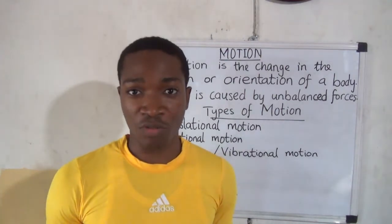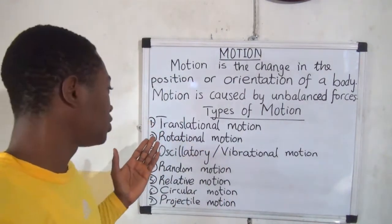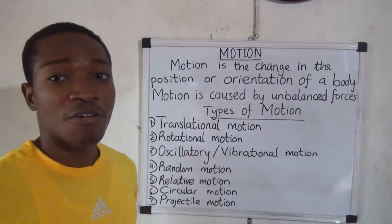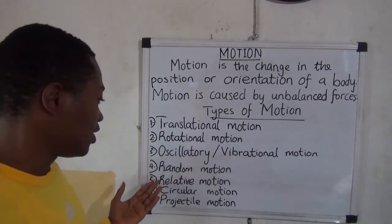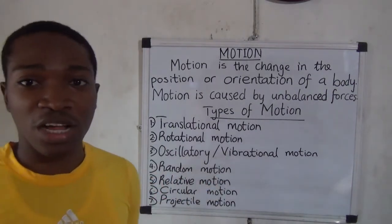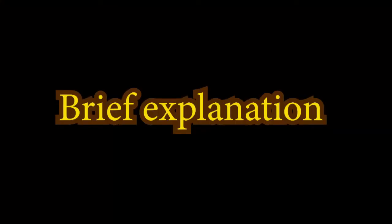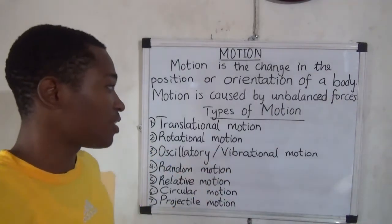There are various types of motion. These are translational motion, rotational motion, oscillatory motion — also called vibrational motion — random motion, relative motion, circular motion, projectile motion, and more. For this lesson, we focus on just the first five.